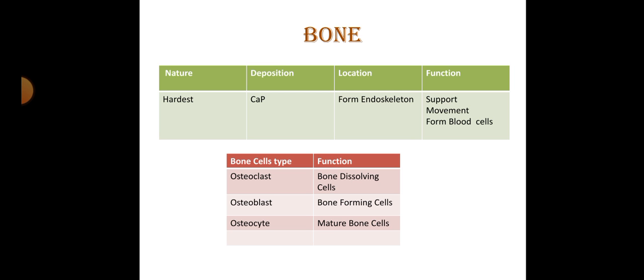Bone cell types and their functions: Osteoclast - these are bone dissolving cells. Osteoblast - these are bone forming cells. Osteocyte - these are mature bone cells.